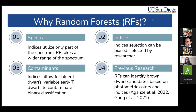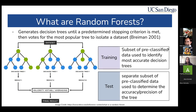Random forests will take the entirety of the spectrum, while using the index method will only take parts of the spectrum. The random forest will also select which indices or which regions of the spectra it finds to be the most important, while we rely on researchers to observe patterns and look at data in the traditional index method. This also allows contaminants to show up — blue L dwarfs, variable early T dwarfs, have been shown to be accidentally classified as binaries when they are actually single stars.